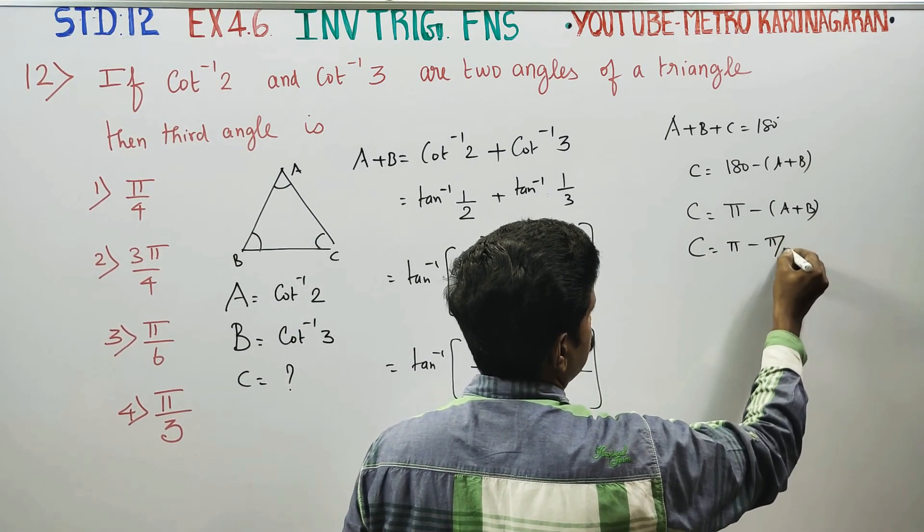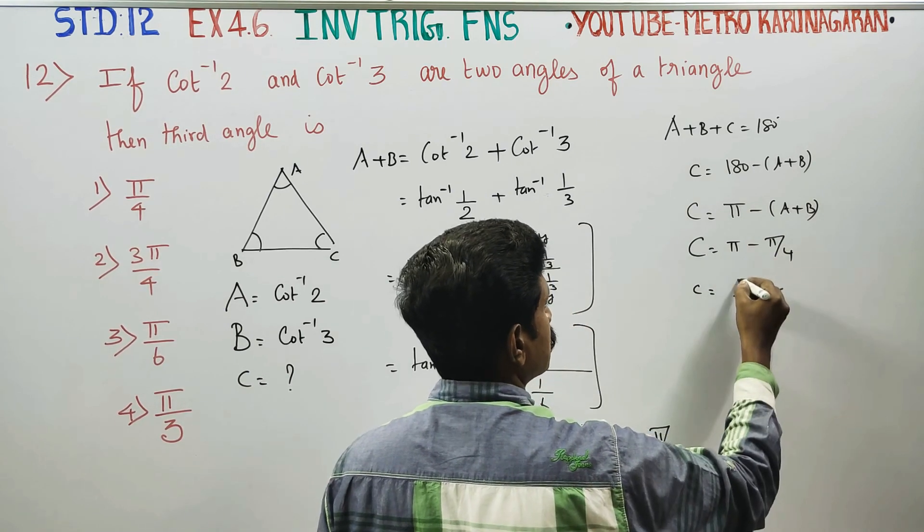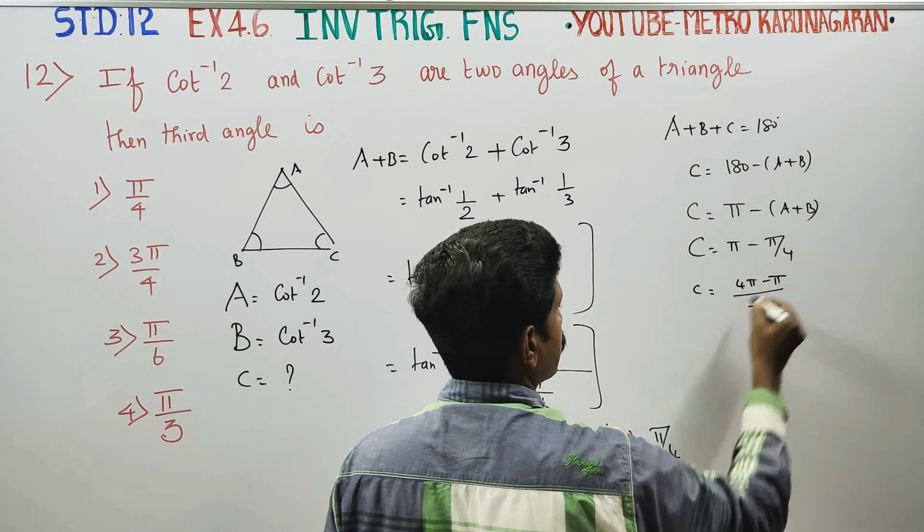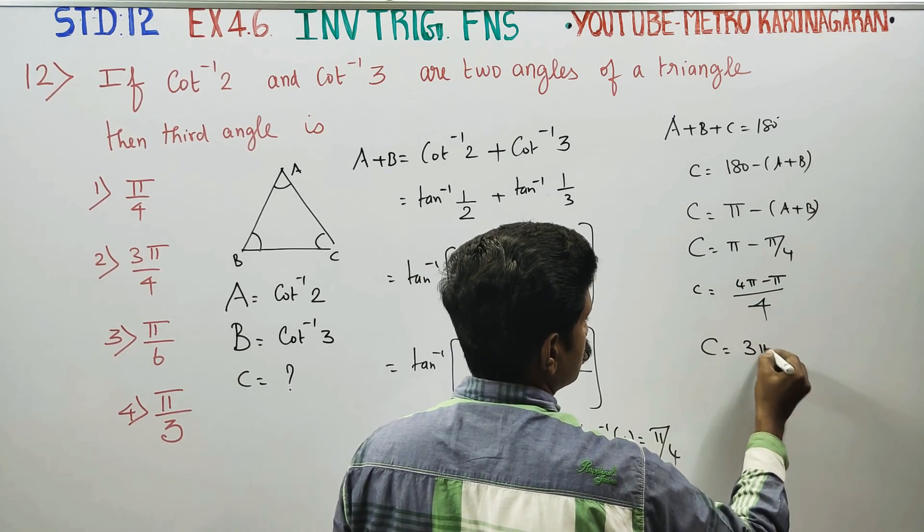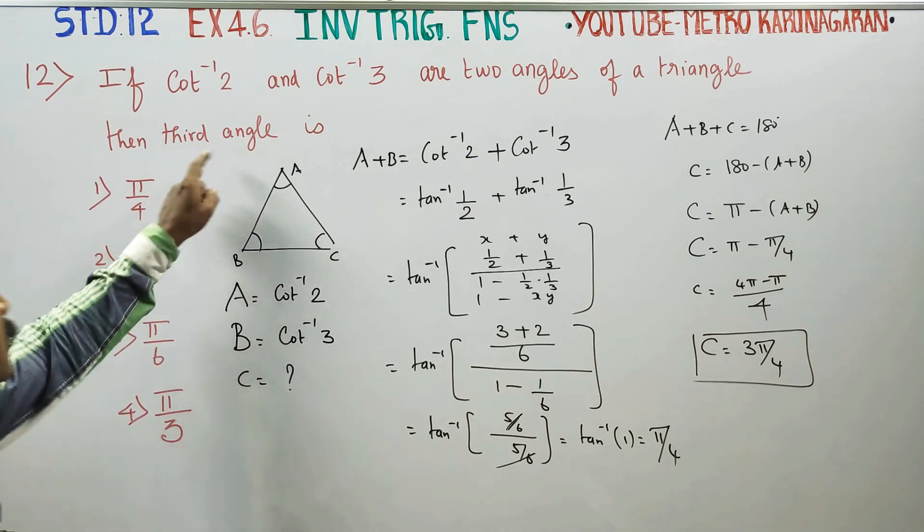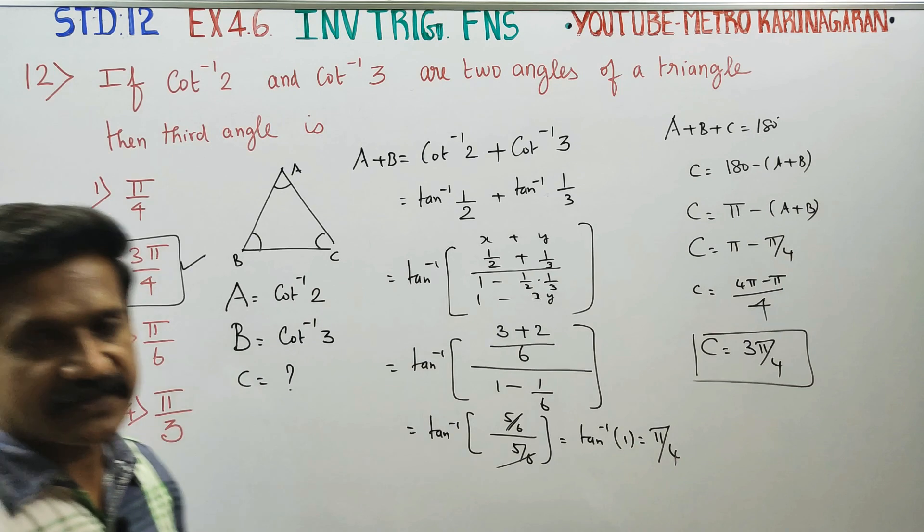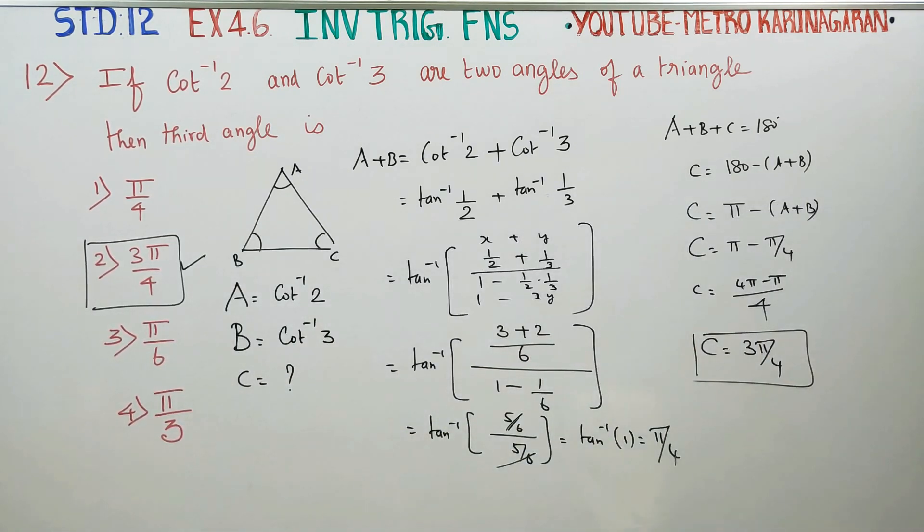For C is equal to pi minus pi by 4. If you take LCM 4, 4 pi minus pi, therefore C is equal to 3 pi by 4 is your final answer. The third angle is 3 pi by 4, therefore your option 2 is your exact answer for this problem. Thank you.